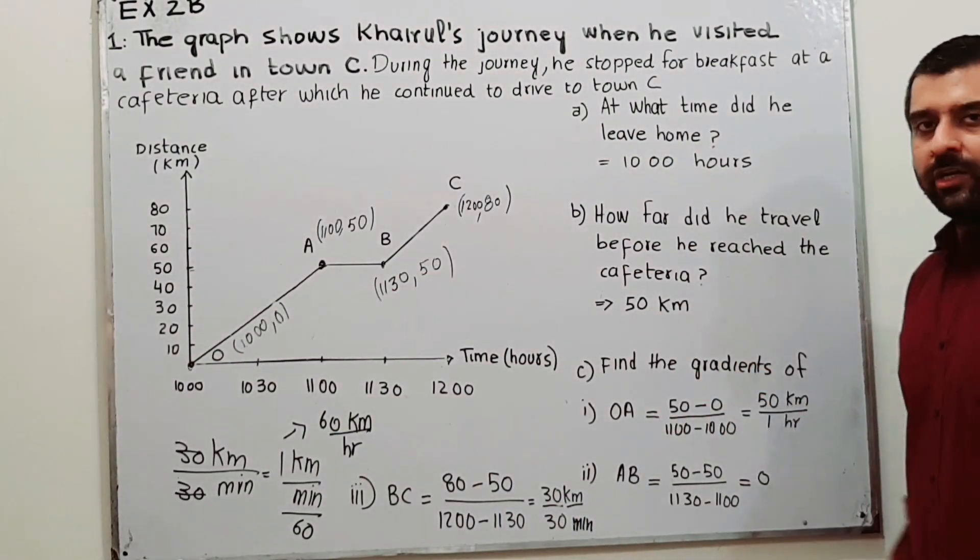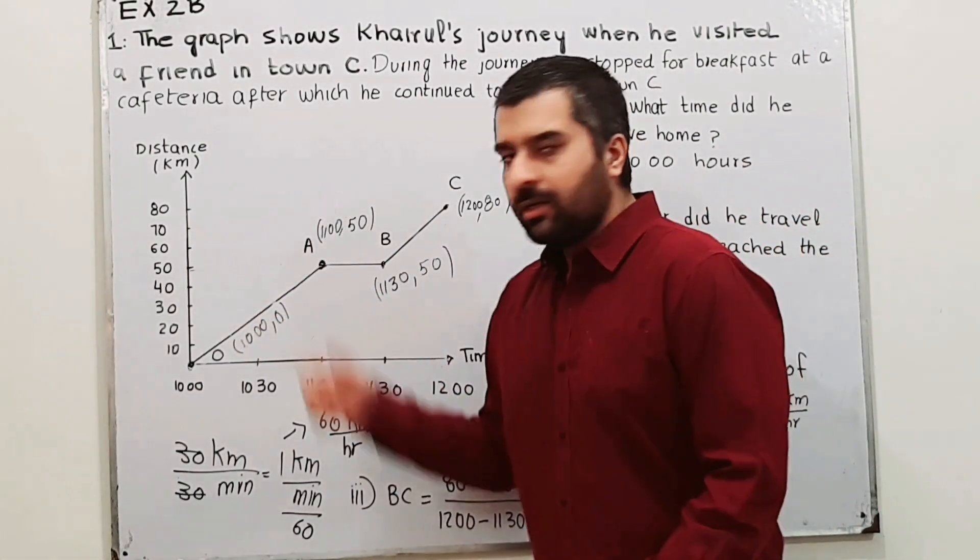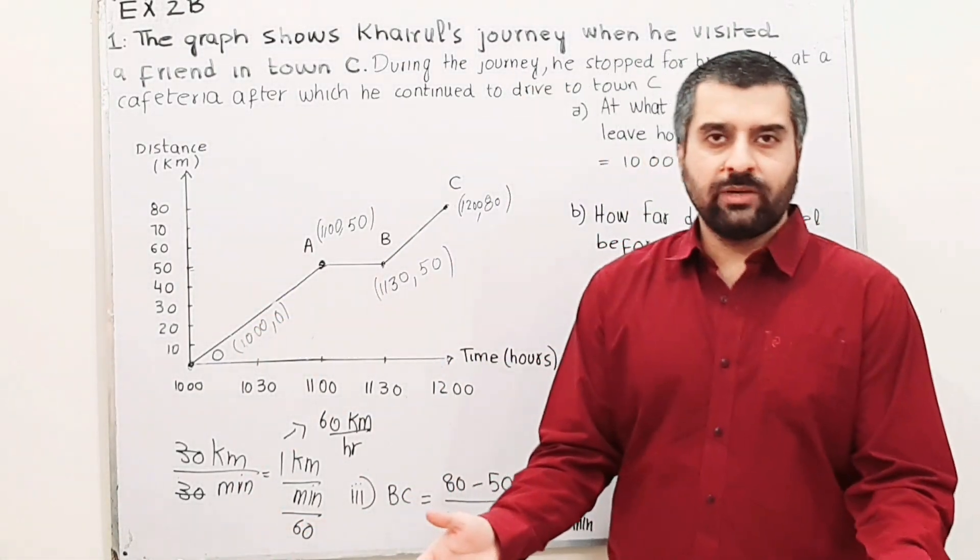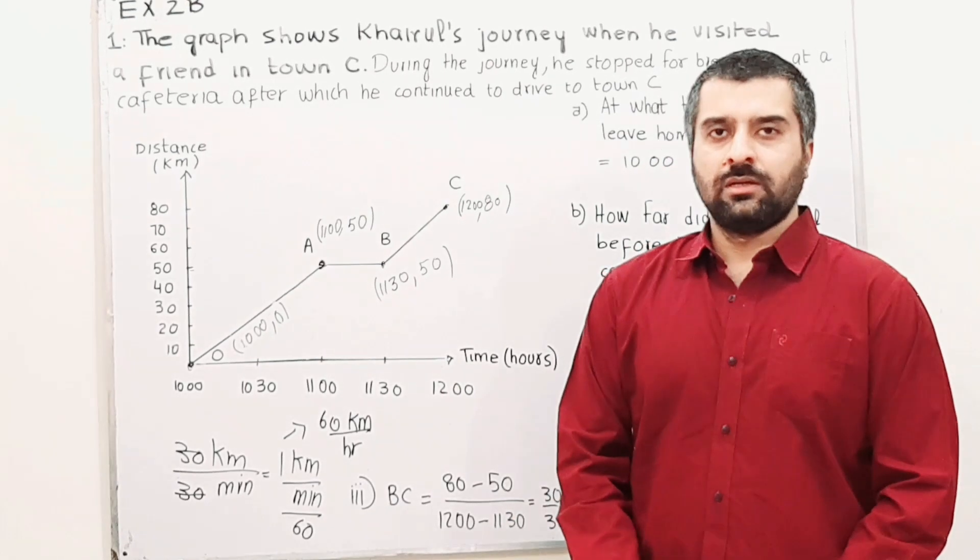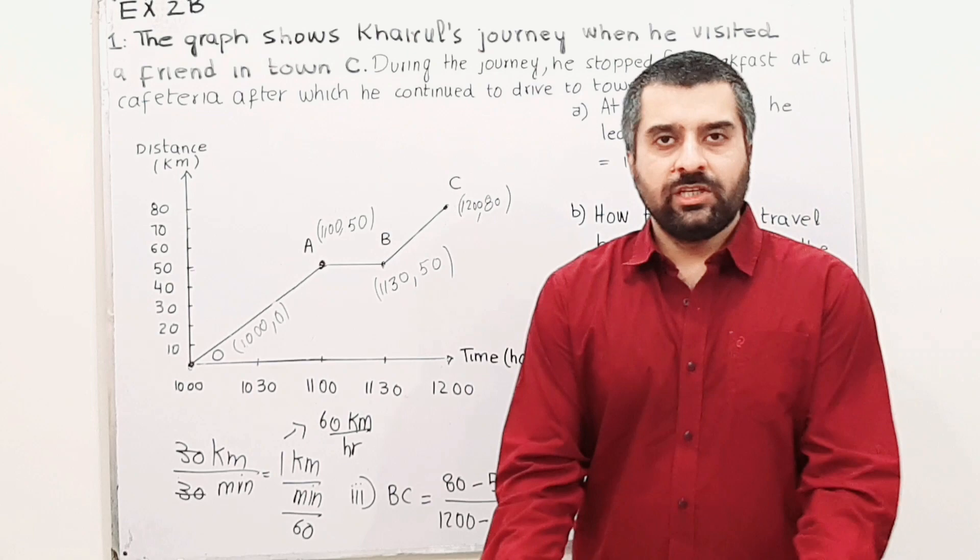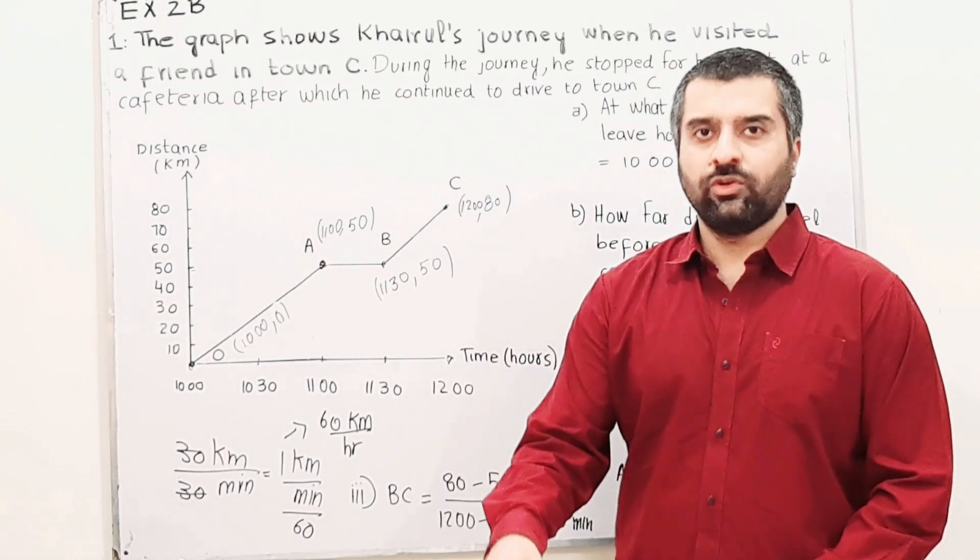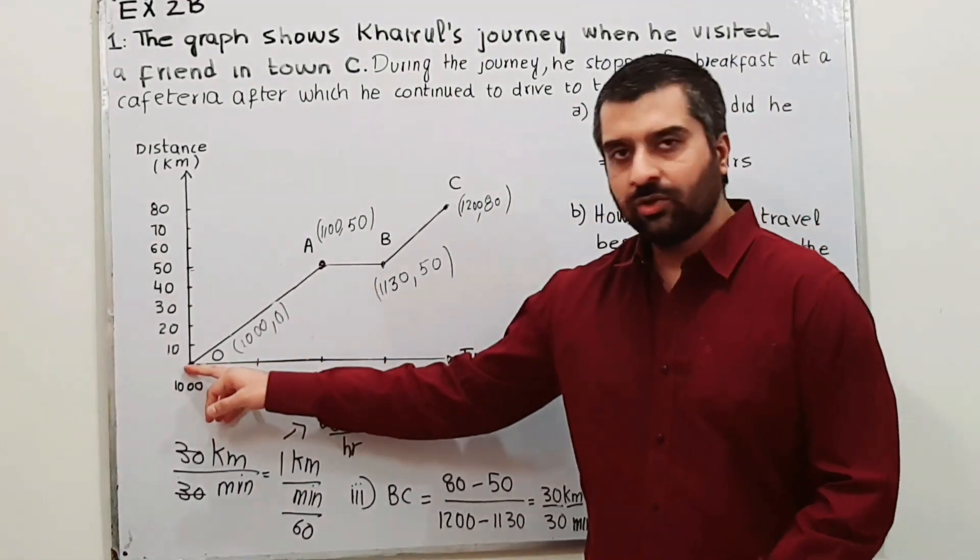Find the gradient of OA. As we know, gradient is y2 minus y1 divided by x2 minus x1, change in y divided by change in x. For that we need two points. We have two points: one point is at A, one point is at the origin.